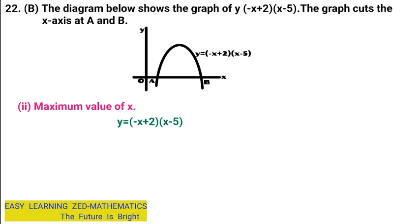I'm going to expand this equation. So I'm going to write y equals, then multiply x by negative x, which gives me negative x squared. Then negative x multiplied by negative 5 gives me 5x. Then I'm going to multiply the terms in the right bracket by 2: 2 times x gives me plus 2x, and 2 times negative 5 gives me negative 10.